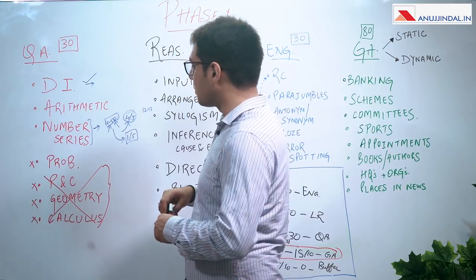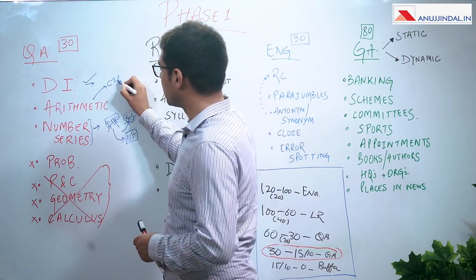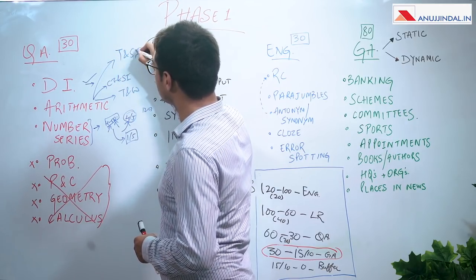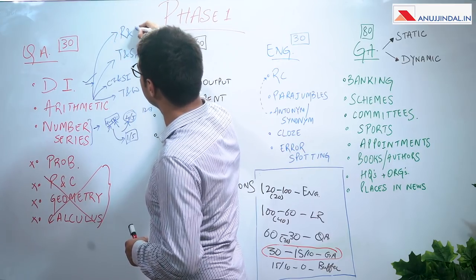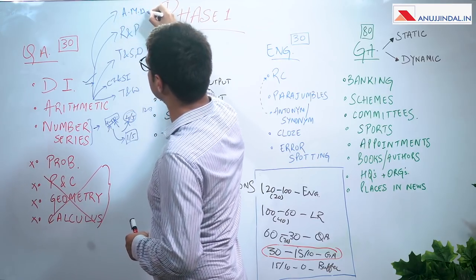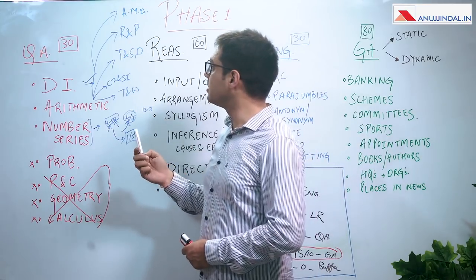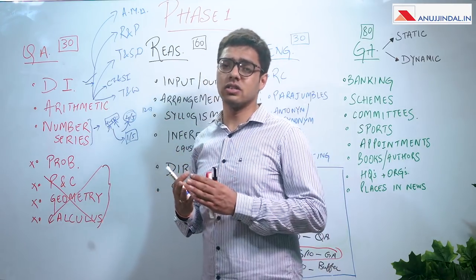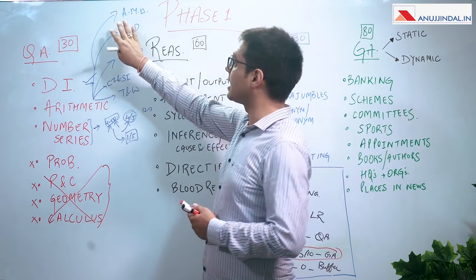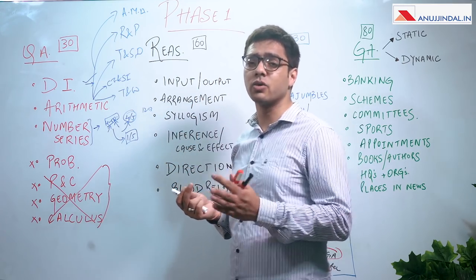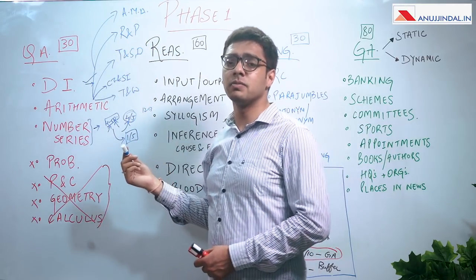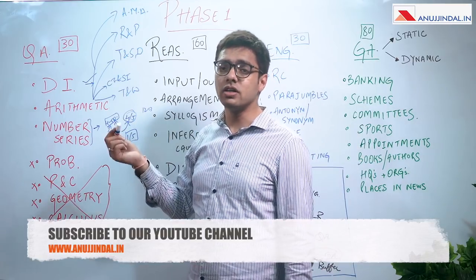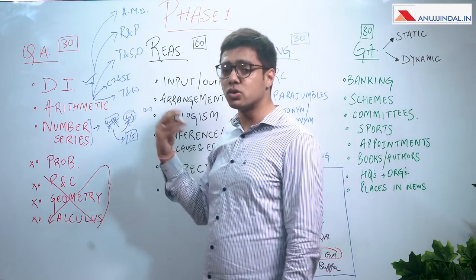Coming back to arithmetic sub-topics: compound interest and simple interest, time and work, time-speed-distance, ratio and proportion, mixtures and allegations. One area I've always been weak in is averages, mixtures and allegations. Since generally only one or at worst two questions are asked, I decided to give this topic a miss. The moment I see an averages, mixtures and allegations question, I don't spend more than five seconds reading it and then dismiss it altogether. You cannot possibly do all questions in quantitative aptitude.